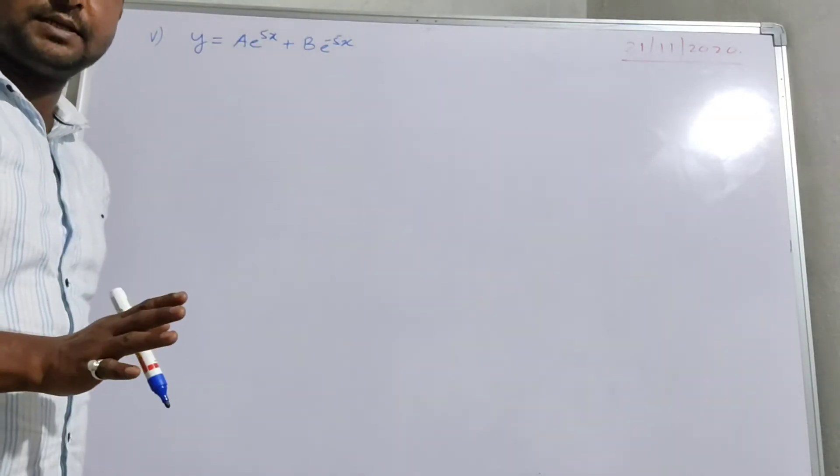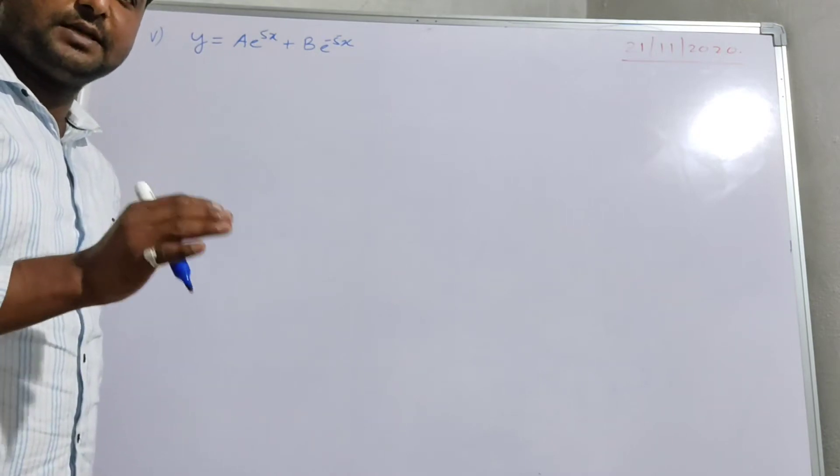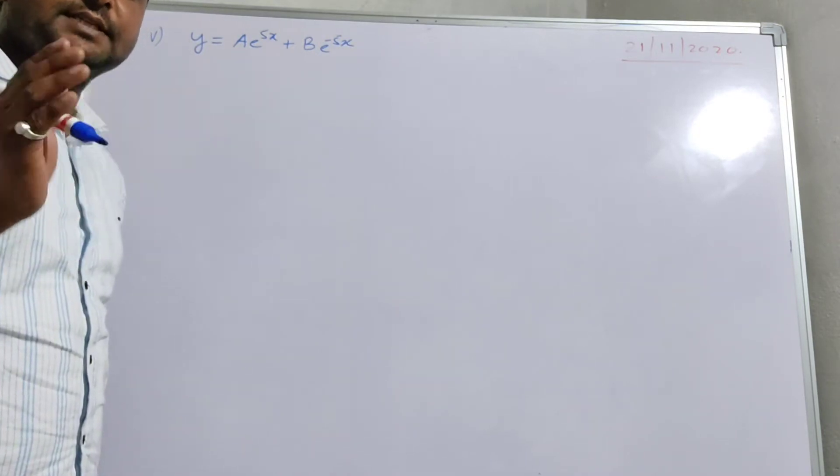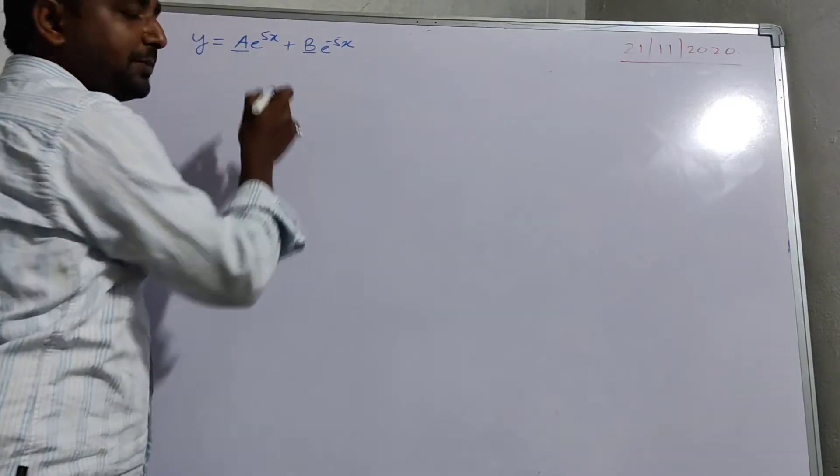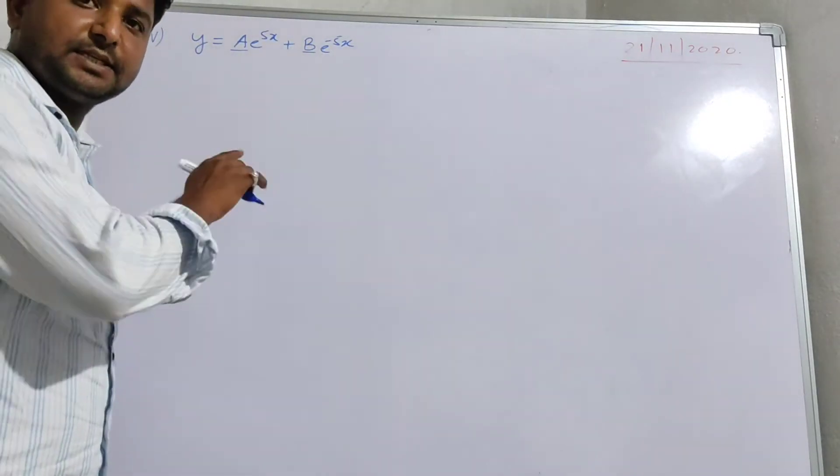Let's make a differential equation. How many arbitrary constants are present? The first arbitrary constant and the second arbitrary constant. This means we need to differentiate this equation two times.